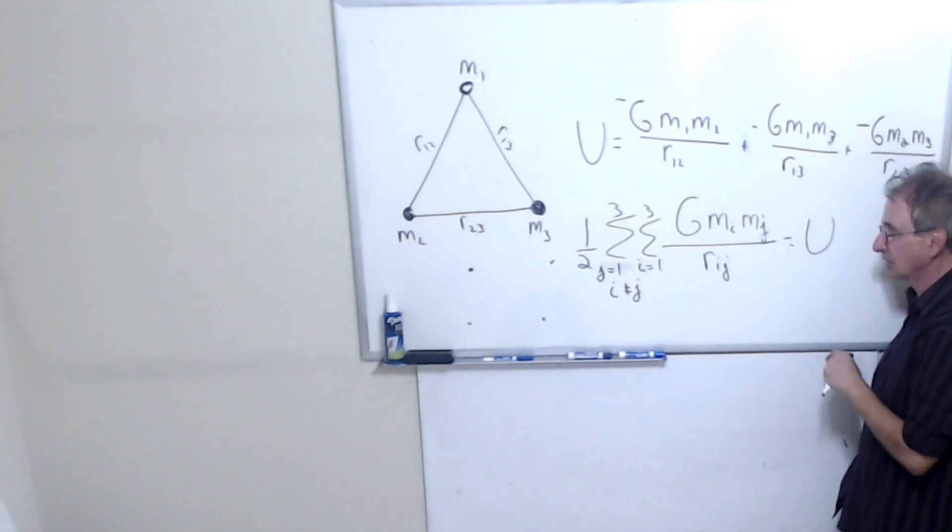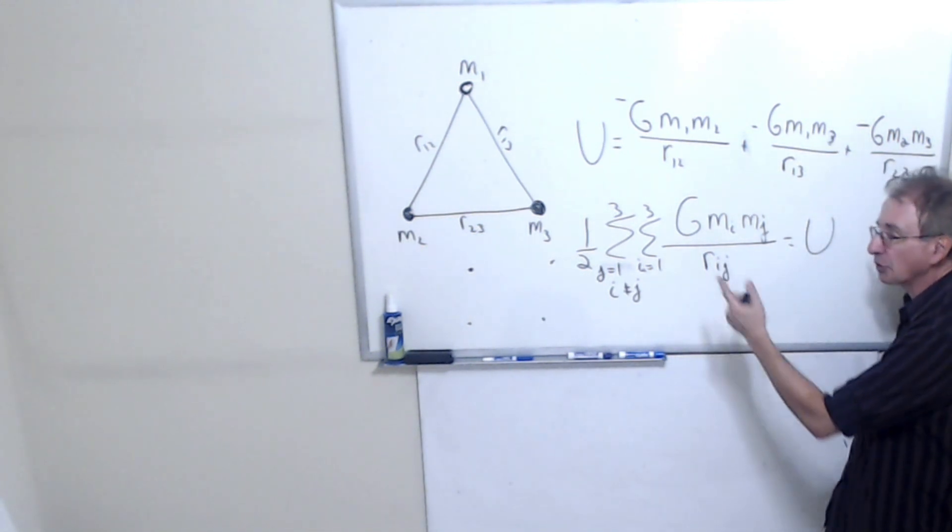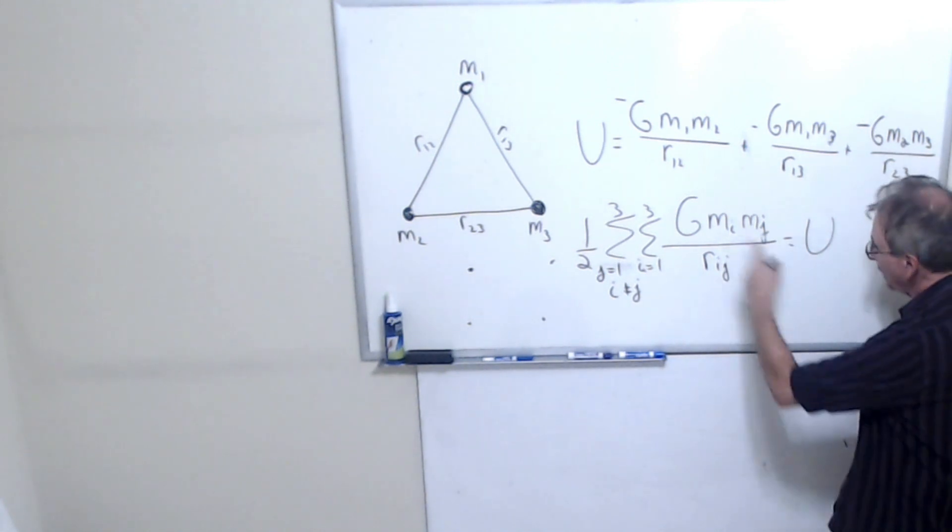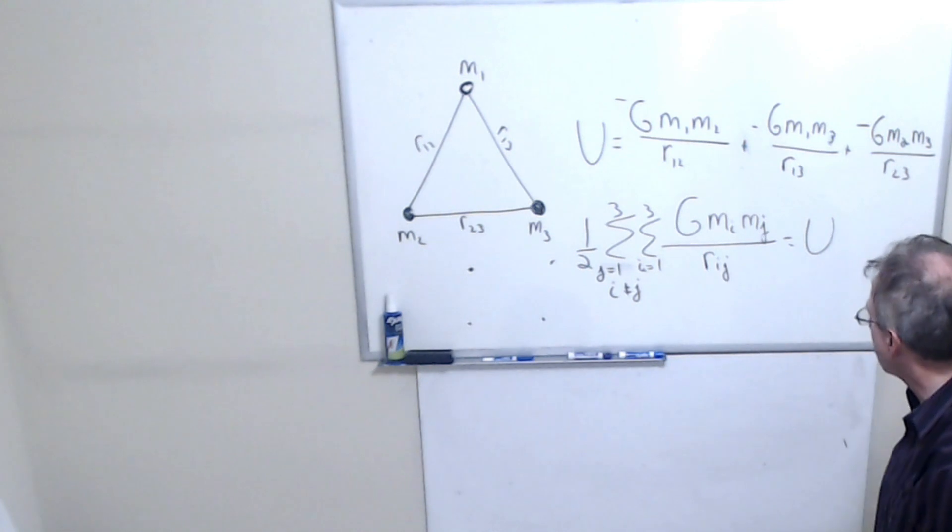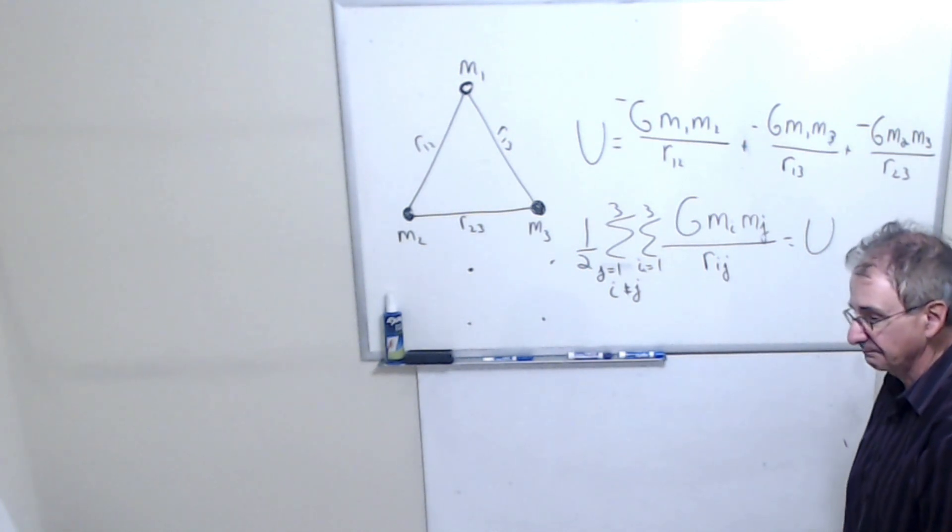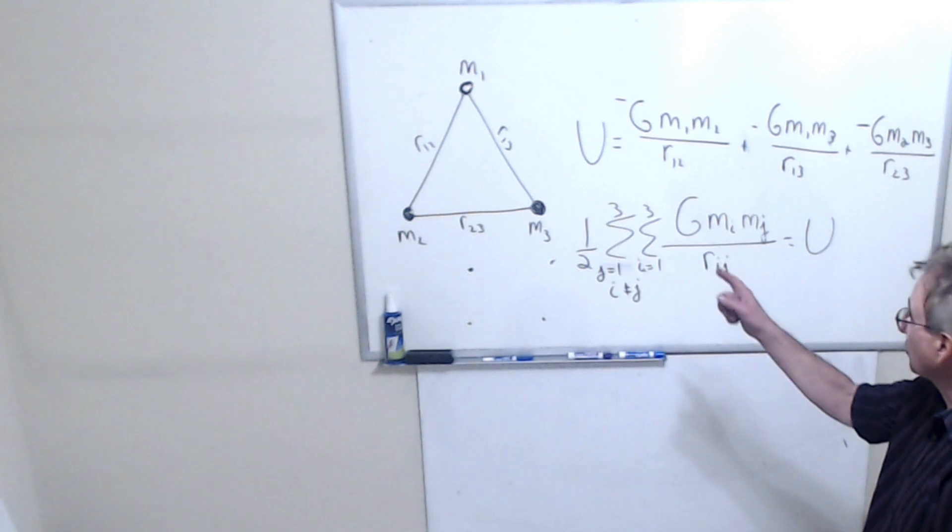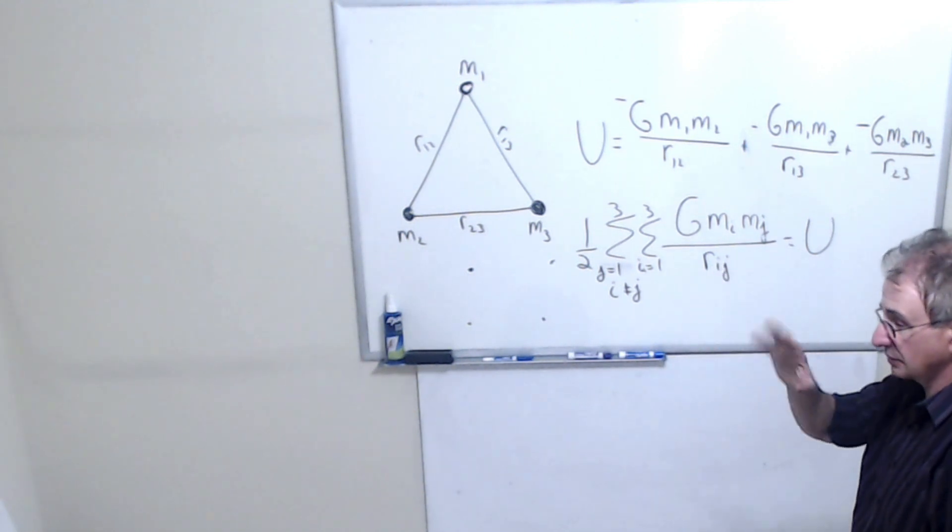So if I were to code this for an arbitrary number of particles, I would have to write something like this. Because I'd have to know what the value of R and J are. Now another way to look at this, another way to come up with this is the following.